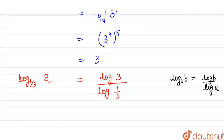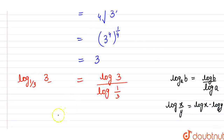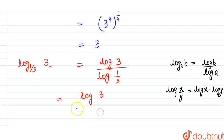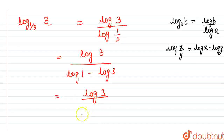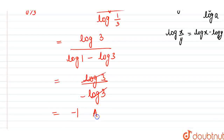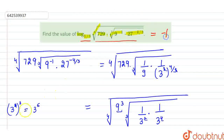Using the property that log (X/Y) equals log X minus log Y, we write log (1/3) as log 1 minus log 3. Since log 1 equals 0, this becomes 0 minus log 3, which is minus log 3. Therefore, log 3 divided by (minus log 3) equals minus 1. So the answer to the given question is minus 1.